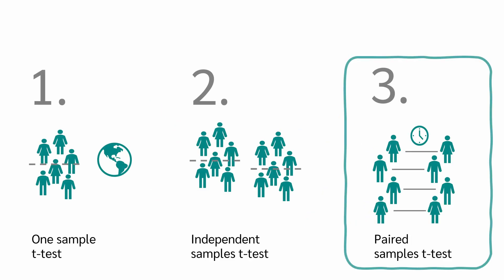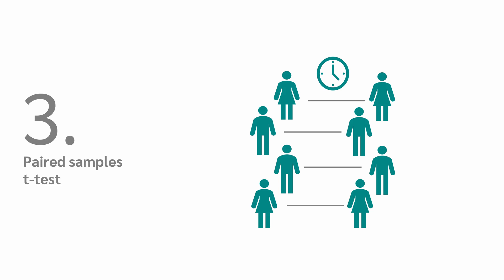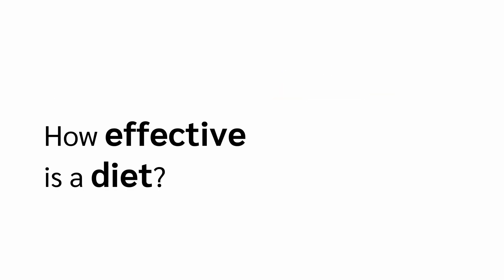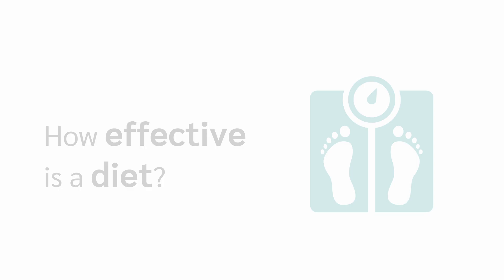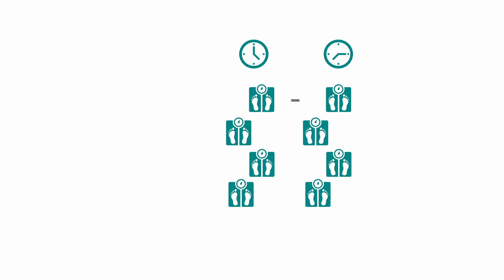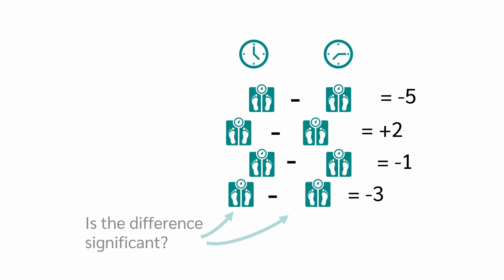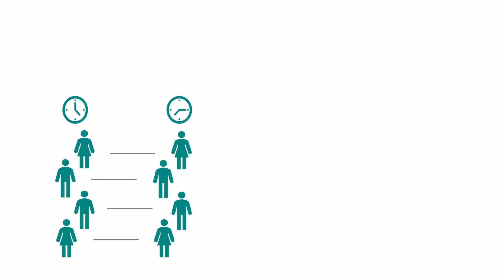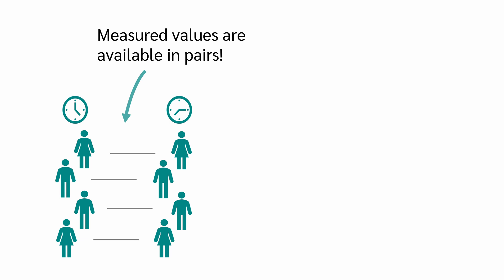And when do we use the paired samples t-test? We use the paired samples t-test to compare the means of two dependent groups. For example, we want to know how effective a diet is. To do this, we weigh 30 people before the diet and then weigh exactly the same people after the diet. We can then look at the difference in weight between before and after for each subject, and use a paired samples t-test to test whether there is a significant difference. In a paired sample, the measurements are available in pairs — resulting, for example, from repeated measurements with the same people.